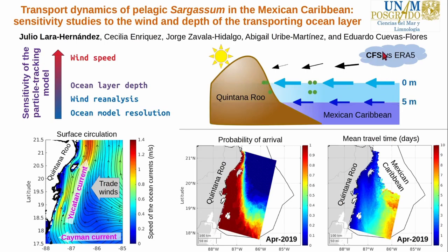The usually stronger winds from the CFS reanalysis caused 2% more strandings than the winds from the ERA-5 reanalysis. The spatial resolution of the ocean model didn't show a clear effect on the proportion of stranded particles.